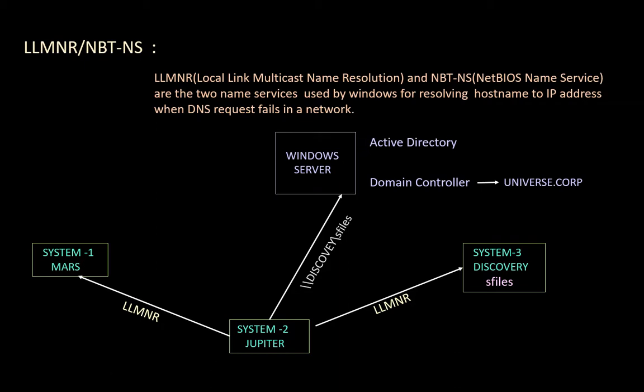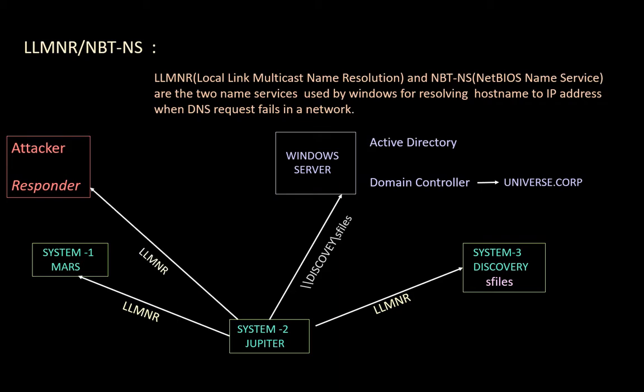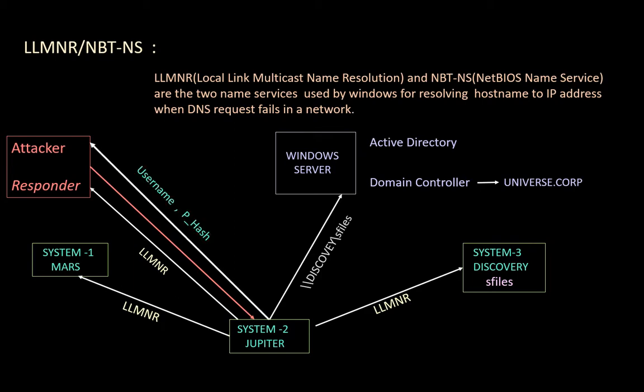Now let us see the LLMNR poisoning attack. Here we have the attacker system in a network who will perform the LLMNR poisoning attack using a tool like Responder, and listen for broadcast requests. Once the attacker receives the broadcast request, they respond to System 2 and ask for the domain user credential. System 2 responds with the domain username and password hash. The attacker can collect this hash using a tool like John or Hashcat and perform further attacks.